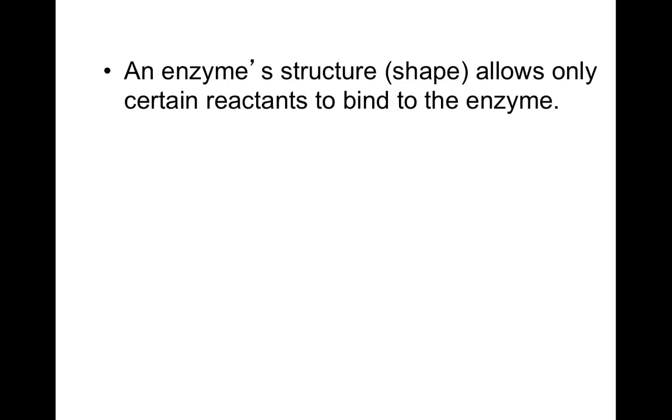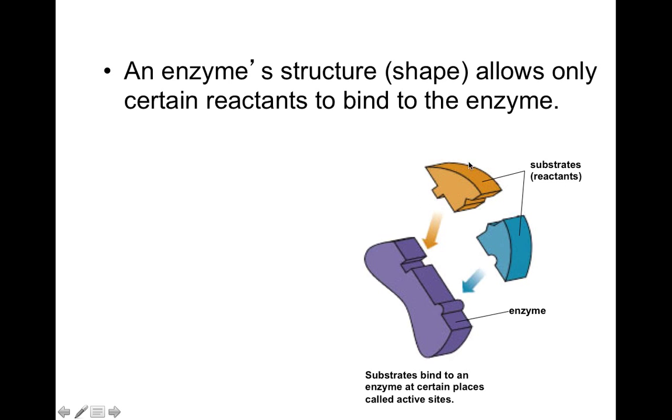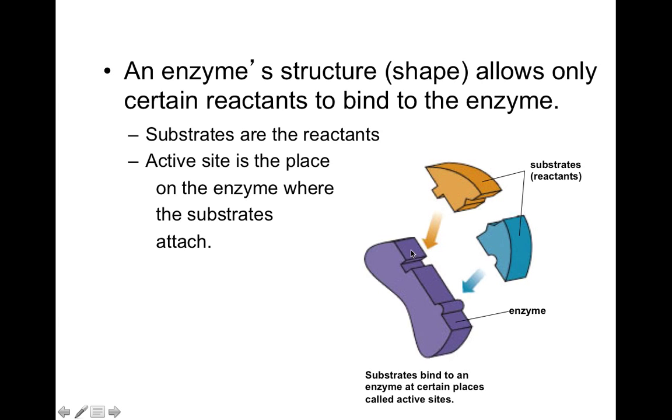Alright, so, an enzyme structure, a shape, allows only certain reactants to bind to the enzyme. Alright, make sure that we're filling in those filling notes. So, here's sort of an illustration of that. This reactant is only going to bind right here on the enzyme. And this one over here is only going to bind to the other side. You can tell because they've got different shapes there. Alright, the substrates are the reactants. So, now when I say substrate, I mean reactant. And the active site is this thing here. Alright, the active site is where on the enzyme these substrates attach. Alright, so we've got the substrates here. Those are also called the reactants. Alright, and then the enzyme, the active site on the enzyme, is where the substrates attach.